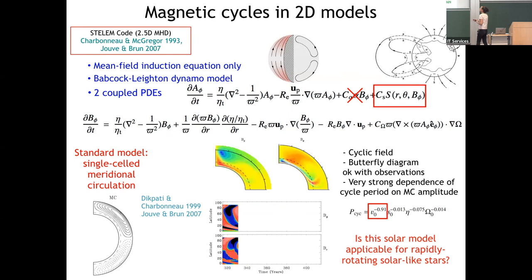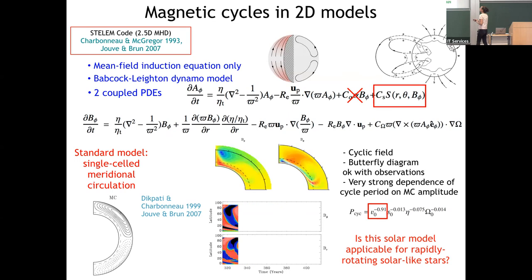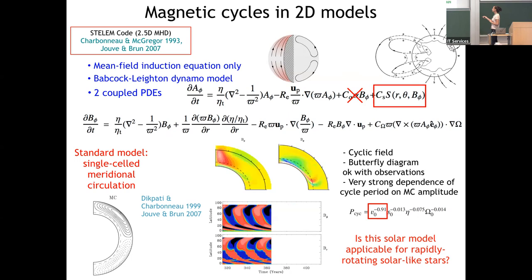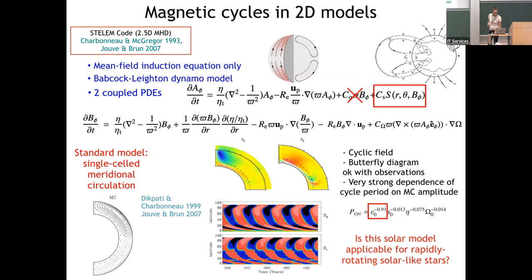The magnetic cycle period in these models is very strongly related to the amplitude of the meridional circulation — the faster the meridional circulation, the shorter the cycle. We can wonder if this model is applicable to other stars, but the problem is that we have no idea of the meridional circulation in other stars.